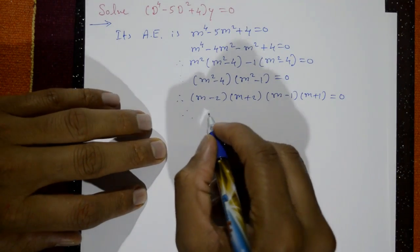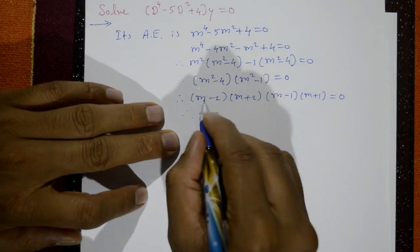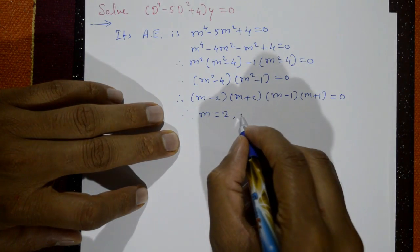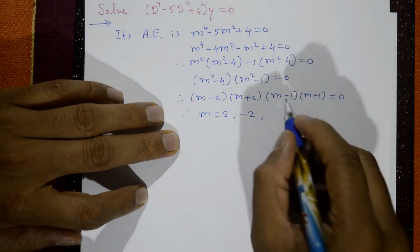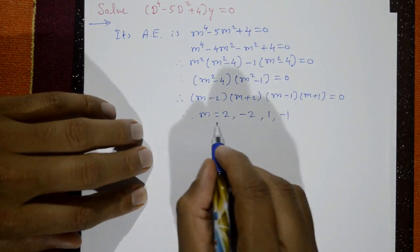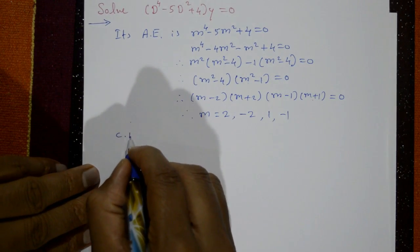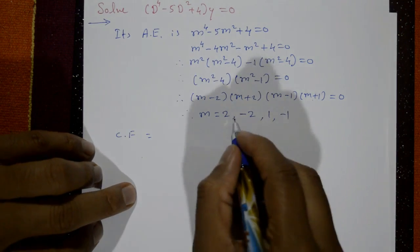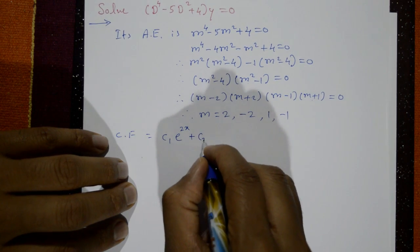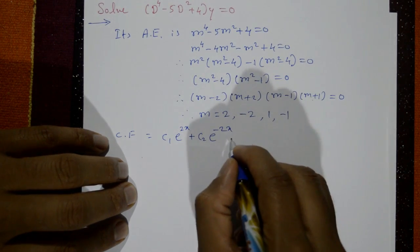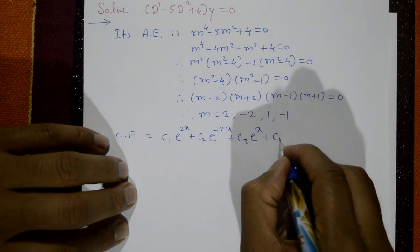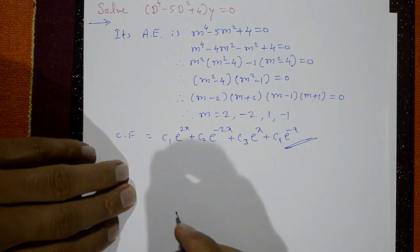The roots are m equal to 2, minus 2, plus 1, and minus 1. All four roots are different. Therefore, the complementary function is c1·e^(2x) plus c2·e^(−2x) plus c3·e^x plus c4·e^(−x). This is the required complementary function.